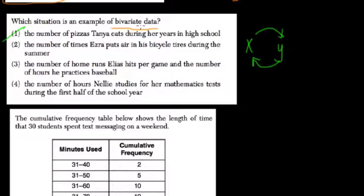The number of times Ezra puts air in his bicycle tires, it's called not bivariate but univariate or one variable. The number of times Ezra puts air in his bicycle tires during the summer, that's again just a frequency, a univariate. It's just how many times you put the air in the tire.